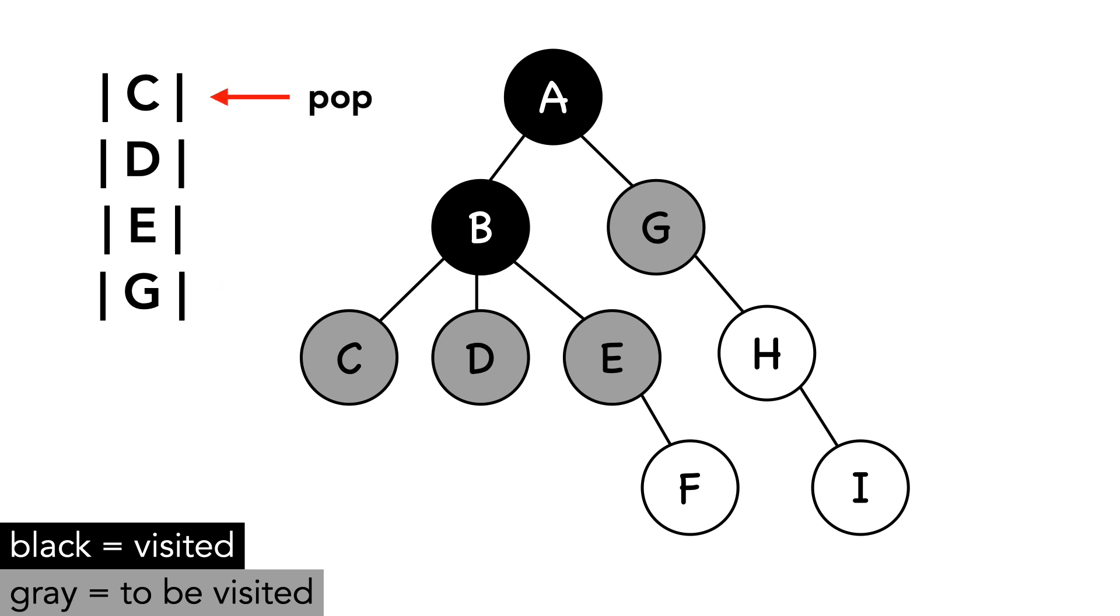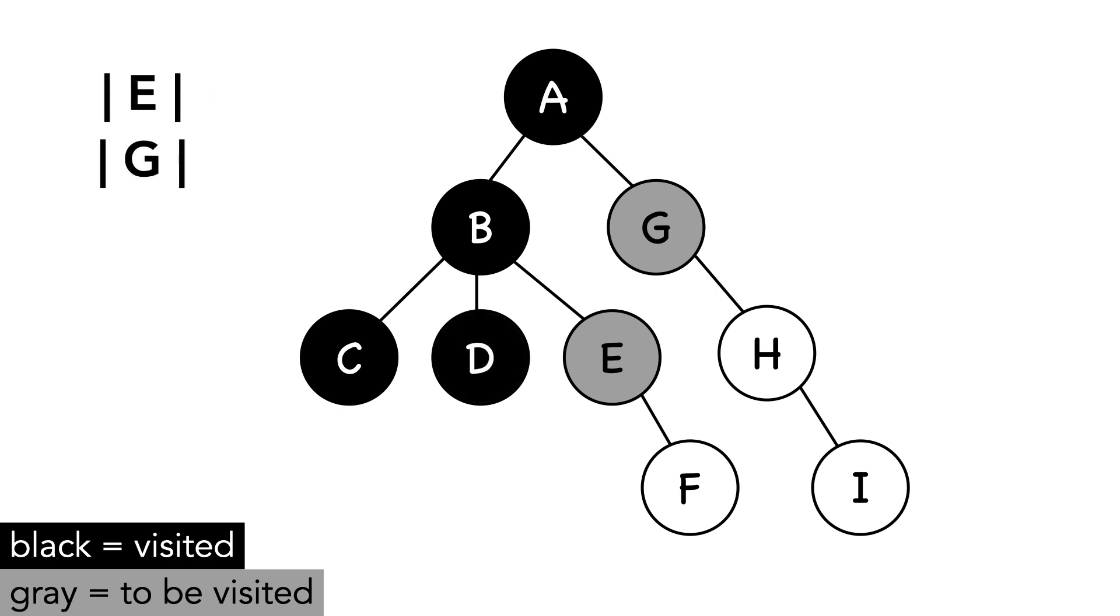C is the next node we'll pop. C and D have no children, so nothing to add to the stack. We reach E and add its child F to the top of the stack.